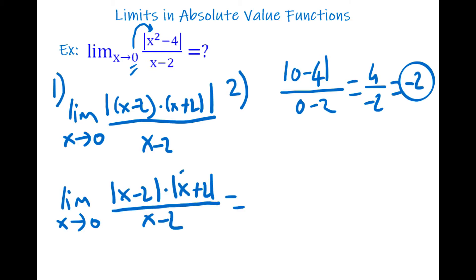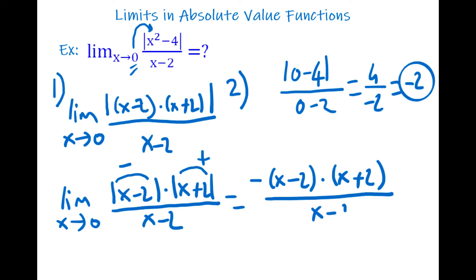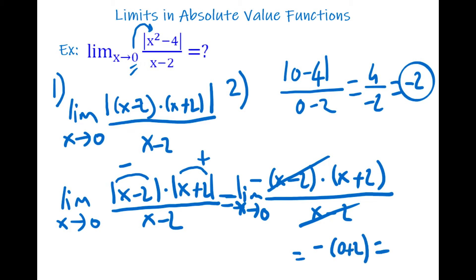When we put 0 instead of x: the inside of |(x + 2)| is positive, but |(x − 2)| is negative, so we put a negative in front of that term. It becomes −(x − 2) · (x + 2) / (x − 2). The (x − 2) terms cancel, leaving −(x + 2). Put 0 for x: −(0 + 2) = −2. Same result.